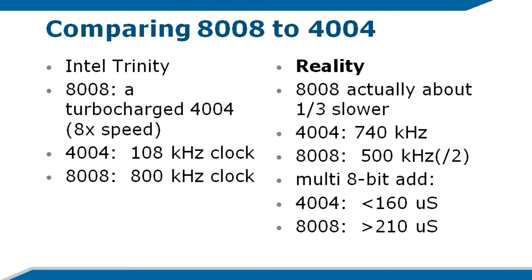There's a book out now that supposedly tells the story of Intel. I can only speak to about a tenth of this book, about 50 pages. I think I've counted something like 80 mistakes in those pages. And one of the things it declared was that the 8008 was a turbocharged version of the 4004.